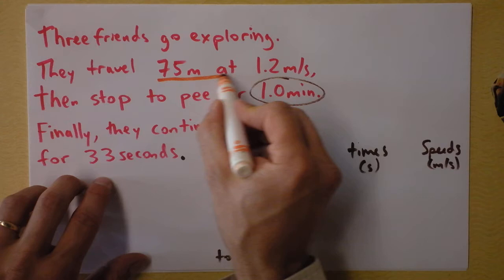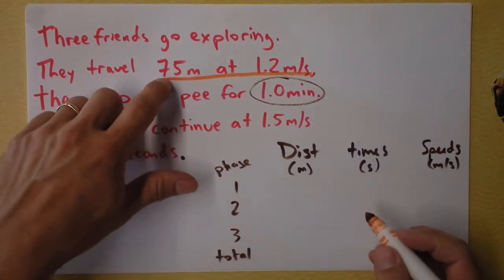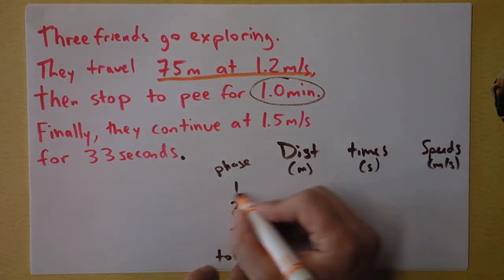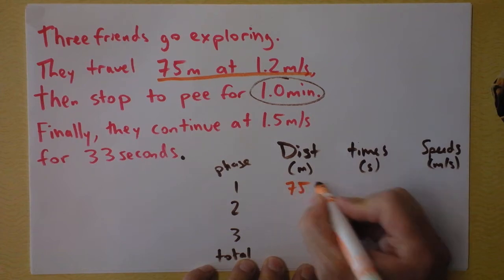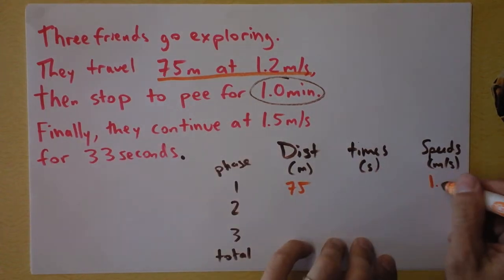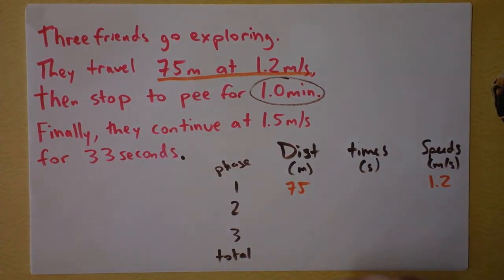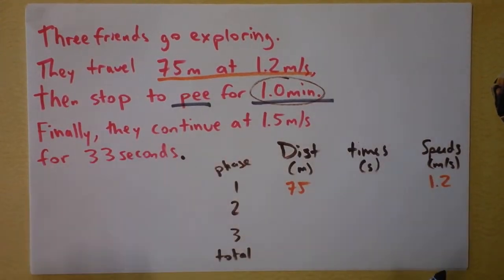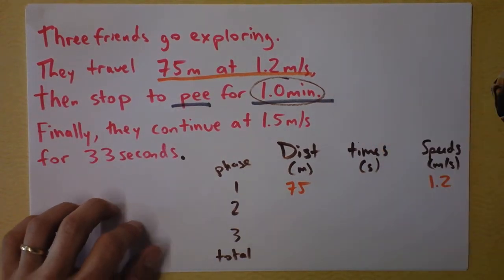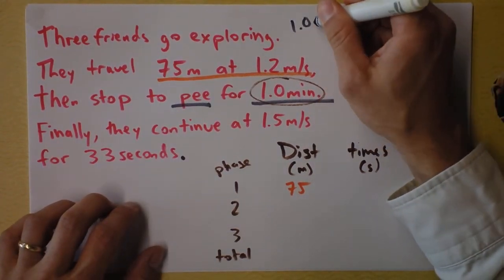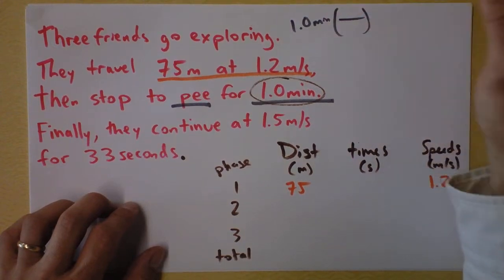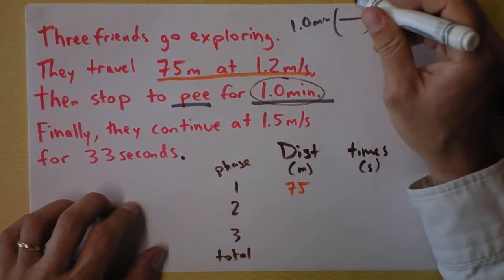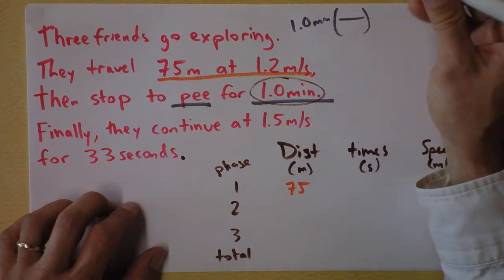So first I'll fill in this information right here, 75 meters at 1.2 meters per second. So phase one is 75 meters, and the speed is 1.2 meters per second. And phase two we'll do in gray, because it's very boring, peeing for 1.0 minutes. We've got to convert minutes into seconds, and I know that 1.0 minutes can be multiplied by 1 like this. I say one minute is the same thing as 60 seconds.